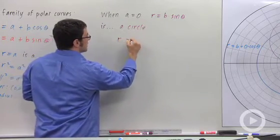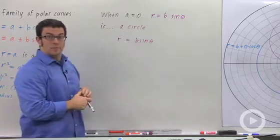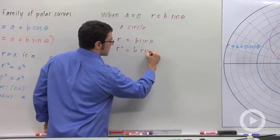If you take r equals b sine theta and multiply both sides by r, you get r squared equals b times r sine theta.